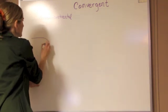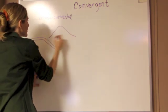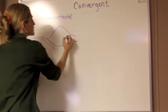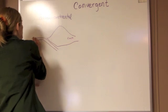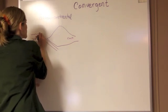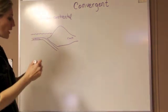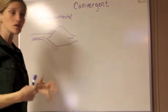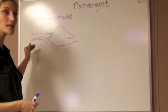I'll draw it quickly and then explain everything you start to see. This is our continent and this is our oceanic plate. We know it's oceanic — it's underneath the water and it's going to be a lot thinner. Oceanic lithosphere is made out of basalt, it's more mafic in composition, so it's denser.